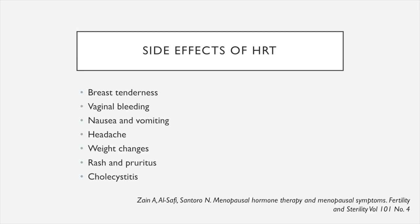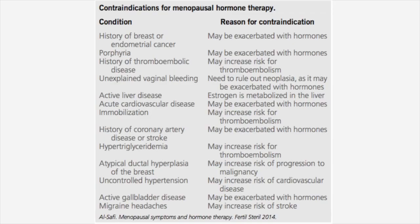As for the side effects of hormone replacement therapy, patients may sometimes feel breast tenderness, experience vaginal bleeding, nausea and vomiting, headache, weight changes, rash and pruritus, and cholecystitis. Contraindications for menopausal hormone therapy include history of breast or endometrial cancer, history of thromboembolic disease, unexplained vaginal bleeding, active liver disease, acute cardiovascular disease, history of coronary artery disease or stroke, uncontrolled hypertension, and active gallbladder disease, among others.